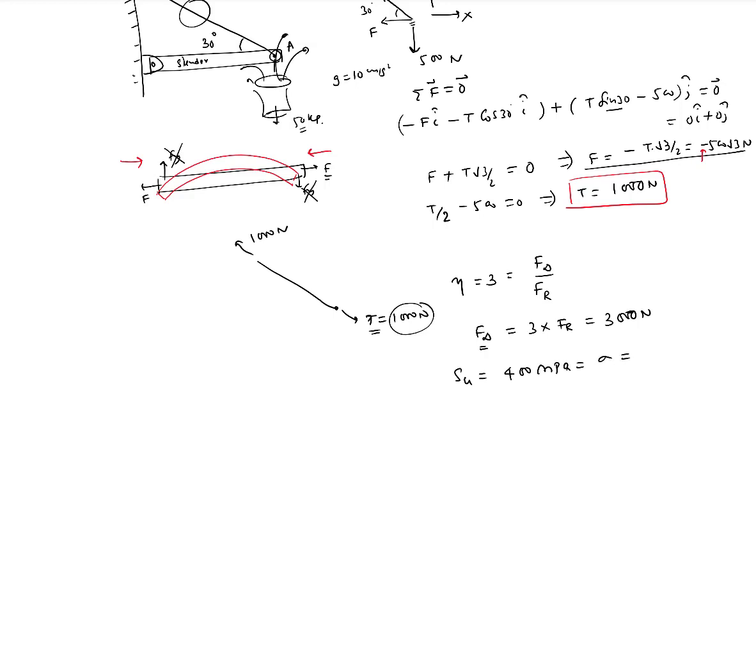That should be equal to sigma, which is Fd divided by pi d squared over 4. Let me do this calculation. Fd is 3000, so we get pi d squared over 4 equal to 3000 divided by 400 times 10 to the power 6. This would be d squared equal to 12,000 divided by 400 times 10 to the power 6 and also pi over here, so this would be 30.